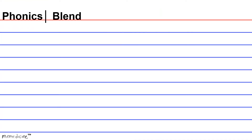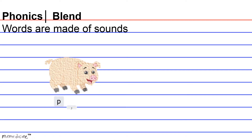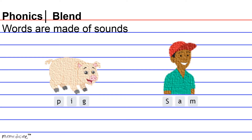Phonics. Blend. Words are made of sounds. As an example of this concept, check out these two examples: P-I-G, Pig. S-A-M, Sam. So as you can see, when we write, we use letters to show sounds in a word. For example, the letters P-I-G in pig demonstrate the sound pig when blended together, and the letters S-A-M make the word Sam. Likewise, when you read, you sound out letters in a word, then blend the sounds together to say the word, as we just saw with our pig and Sam examples.